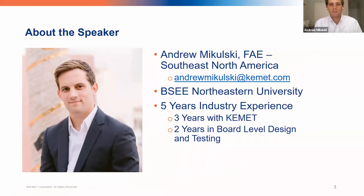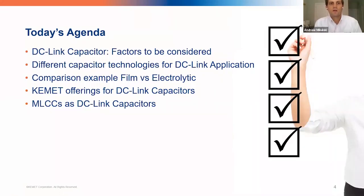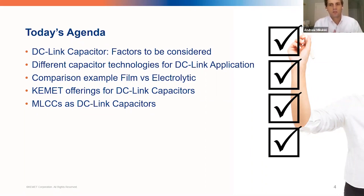The goal of today's discussion is focusing on the DC link capacitor: what kind of factors need to be considered in design — both practical and theoretical. We're also going to discuss the different capacitor technologies available — film, electrolytic aluminums, and ceramic — and do a comparison between film versus electrolytic. We'll also introduce our DC link MLCCs, which are very new for the industry but provide a lot of advantages that some existing technologies really do not allow for.